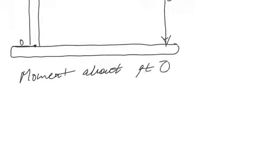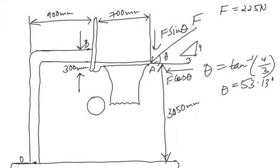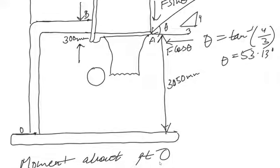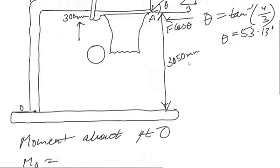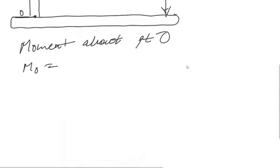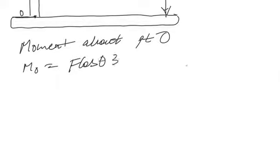The moment about point O, M_O, will be due to the Fcosθ component. Since this moment is in the anticlockwise direction it will be positive, and the perpendicular distance from Fcosθ to point O is 3050 mm. So we get plus Fcosθ × 3050, minus Fsinθ because that moment is in the clockwise direction.